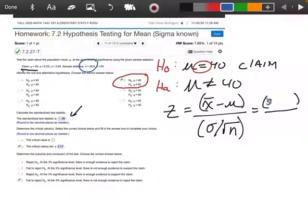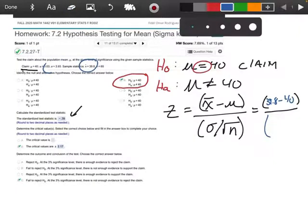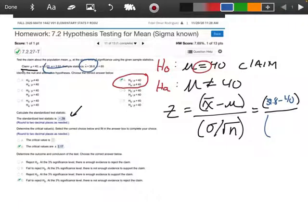My X bar gave that number to me right here. That number is 39.8 minus my mu, which is 40, divided by my sigma, which in this case is 3.93, over the square root of N, which is 60.